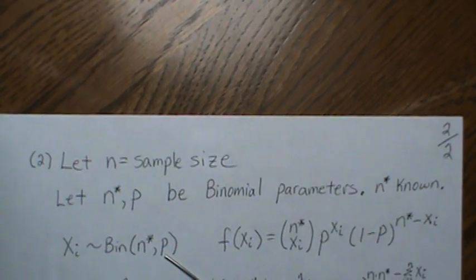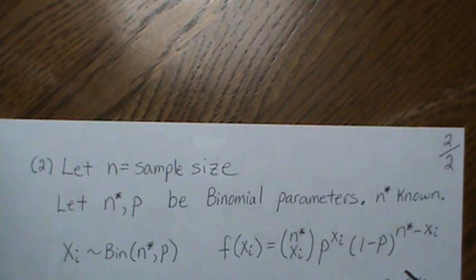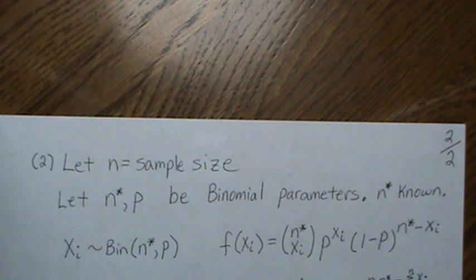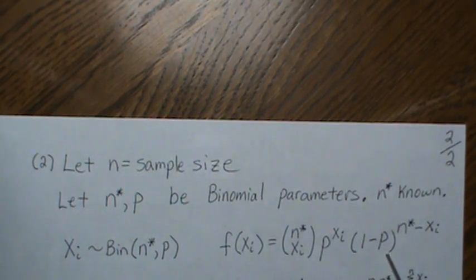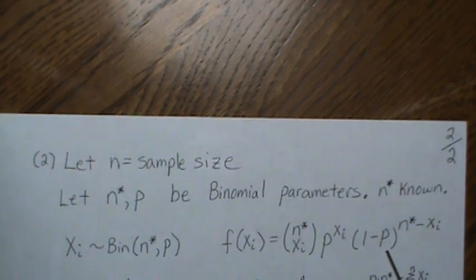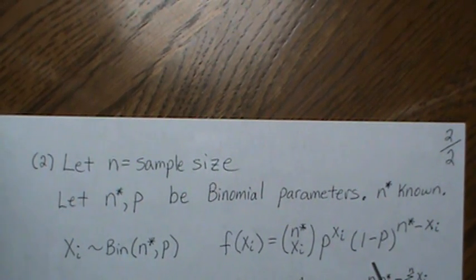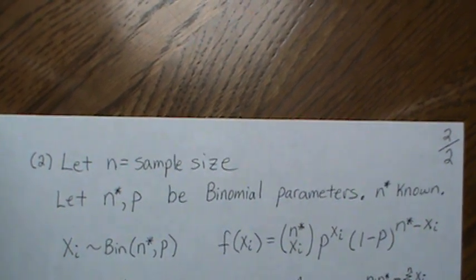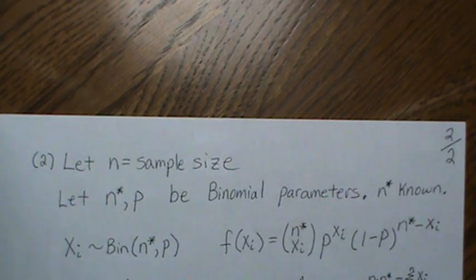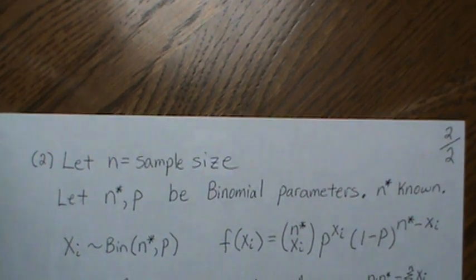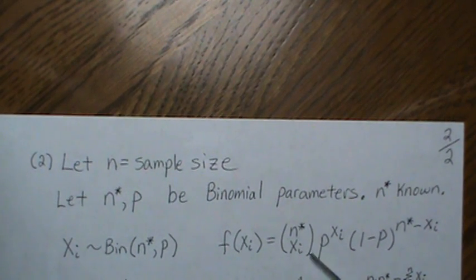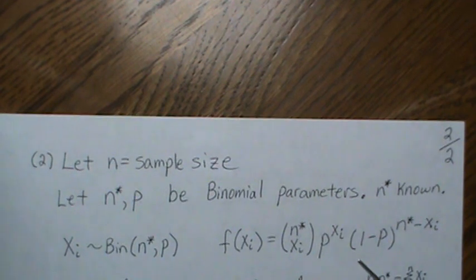So now, if X is binomial with n star and p, then this is the distribution function. Now, the six or seven videos that I looked at stopped right here, and then they took the log of this and then they maximized it. So what they found was the maximum likelihood estimator for a sample of size one, and I think that's a mistake. It's not incorrect, but when you think of it, you take a sample of size n, and then you find the maximum likelihood estimator. So we really need to do more here.